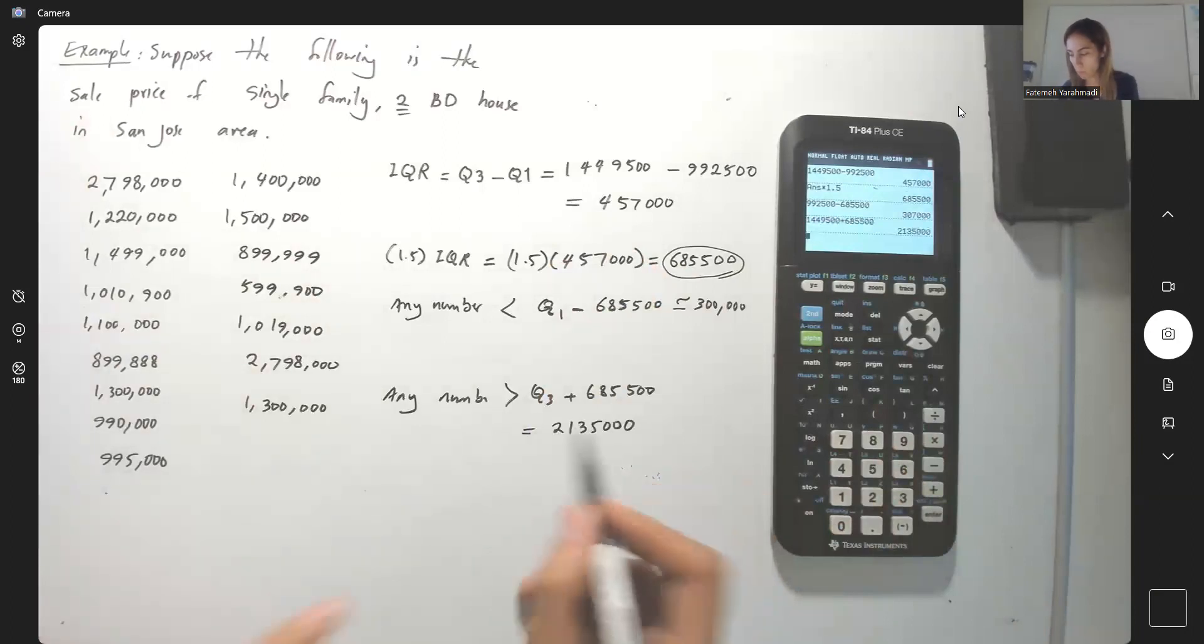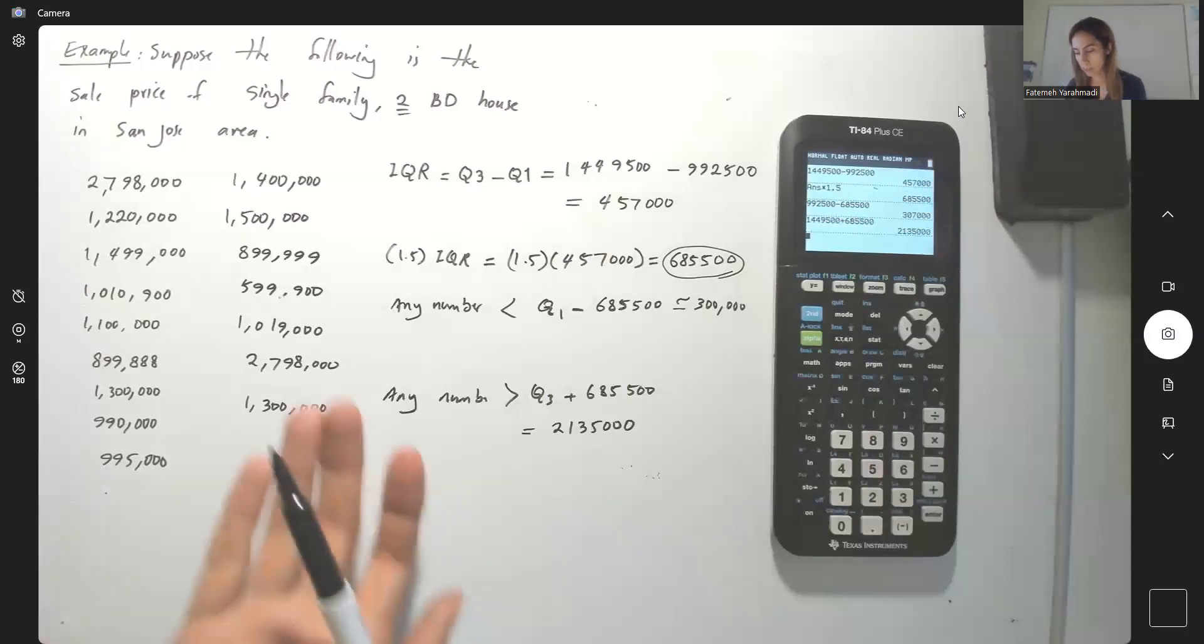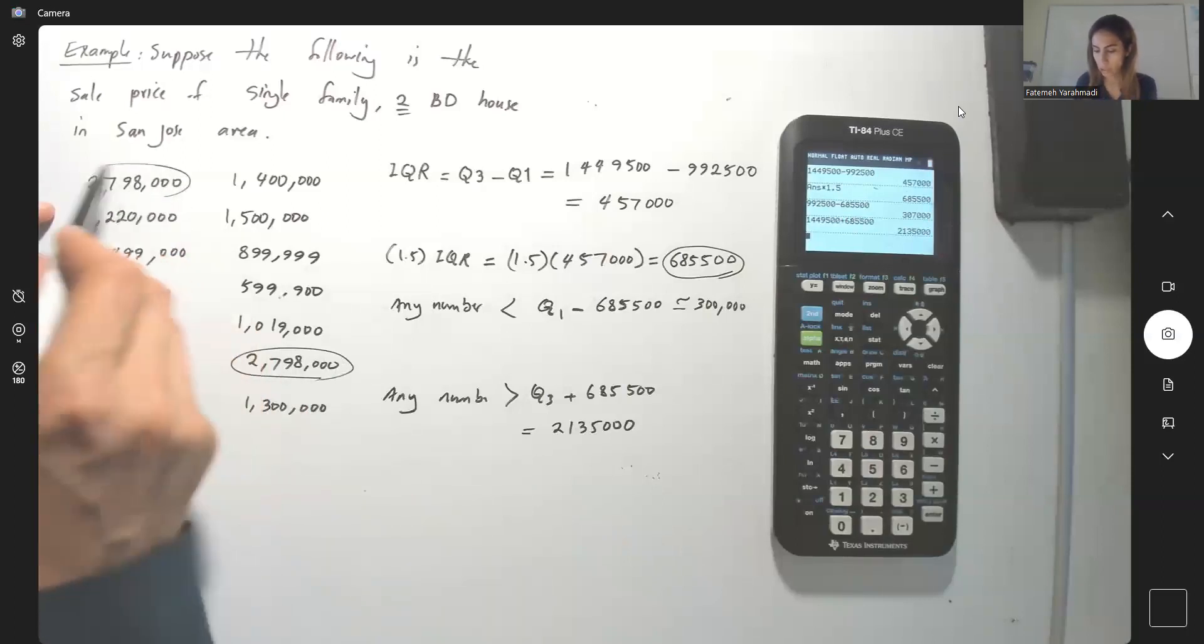Any number in the data more than this number counts as an outlier. So take a look at the data. You have one of them here. What else? The other one is just right here.